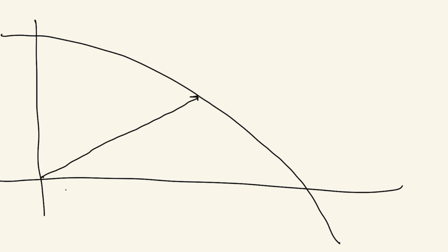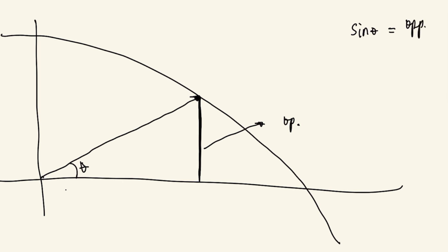Let's consider a portion of a unit circle. We have an angle theta, and we form a triangle by making a projection from the tip of this line segment perpendicular to the x-axis. This is the side opposite theta. So when we solve for sine theta — opposite over hypotenuse — since our hypotenuse is 1, which is the radius of the unit circle, sine theta is equal to the opposite side.